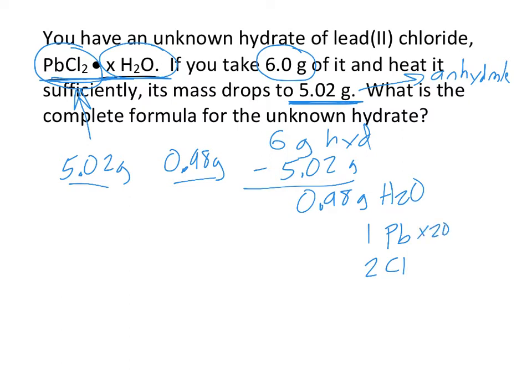So Pb is 207.2, chlorine is 35.45. So we're just going to find the mass of this thing overall. So 207.2 plus 70.9 gives me a molar mass of 278.1. So remember, that's how many grams there are in one mole of PbCl2.